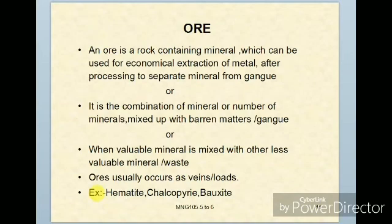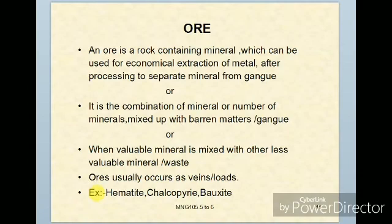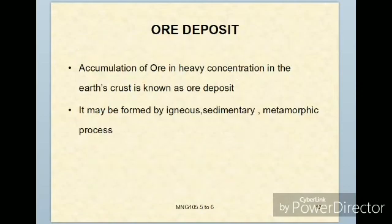What is ore? Ore is a rock containing minerals which can be used for economical extraction of metals after processing and separation of minerals from the gangue. Ore is the combination of mineral with waste-containing rock, known as gangue. This mixture is called ore. Examples of ore minerals are hematite, chalcopyrite, bauxite, and magnetite — these are iron ores. The ores occur in veins or lodes, which can be in vertical positions in a rock content of the mineral. A vein or lode is called an ore deposit.